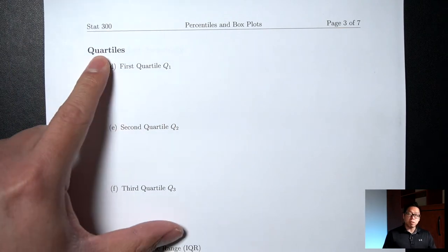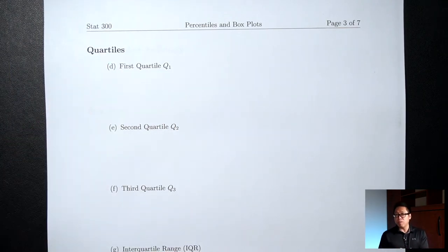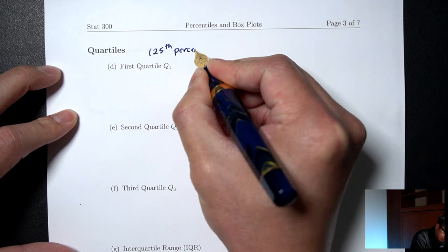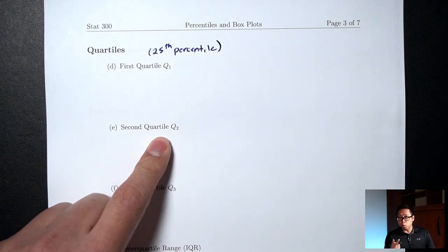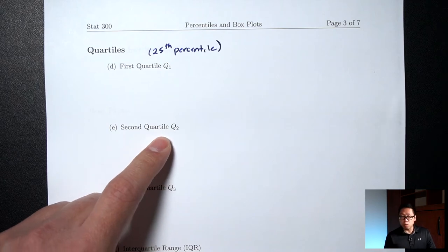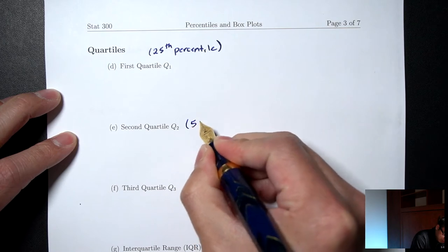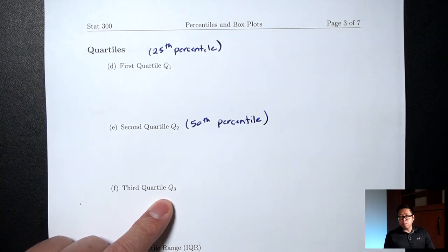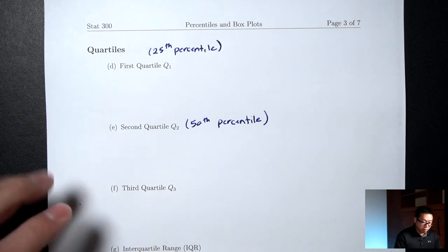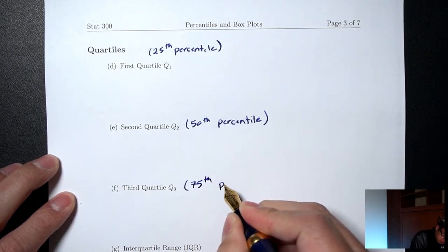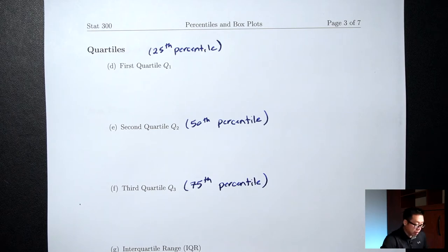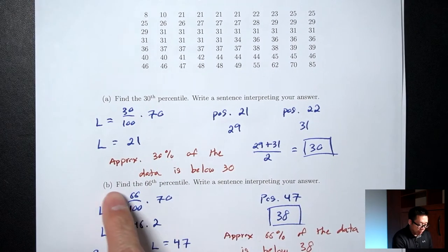There are special percentiles called quartiles. The word quartiles comes from the word quarter — a quarter is 25 cents. The first quartile is the 25th percentile, the second quartile is the 50th percentile, and the third quartile is the 75th percentile. Calculating these uses exactly the same method as we used in parts A and B.